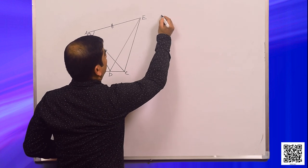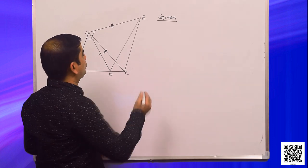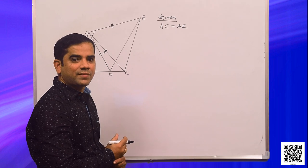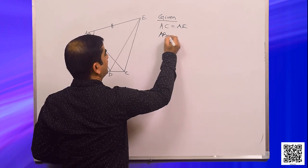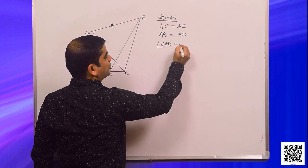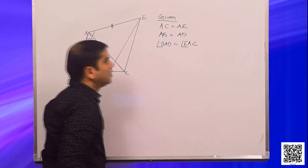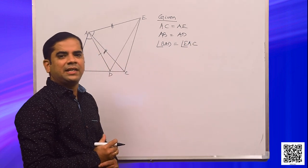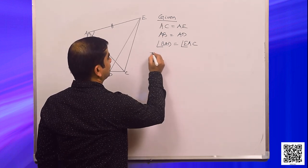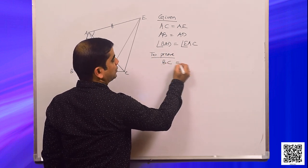What are the given data? Given: AC is equal to AE, AB is equal to AD, and angle BAD is equal to angle EAC. What is being asked? It is being asked to show that BC is equal to DE.